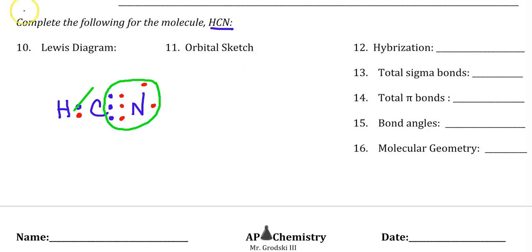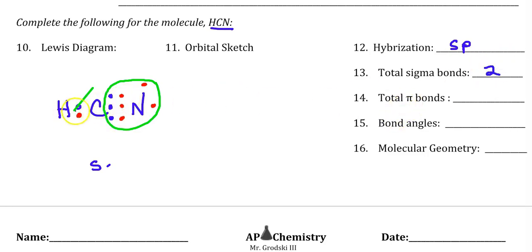Hybridization: count the regions of electrons. There is one region on one side of the carbon and another region on the other side — that means S and a P came together and made SP hybridization. This is SP hybridized. Total sigma bonds: we know one bond has to be a sigma. This is a triple-bonded area, but one of the three has to be a sigma, so that's going to be two sigma bonds total. Total pi bonds: the second and third bonds are pi, so there are two pi bonds. Bond angle: SP only has 180°, so it's linear.